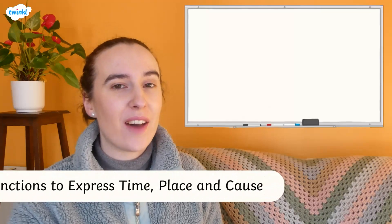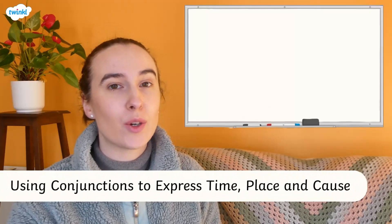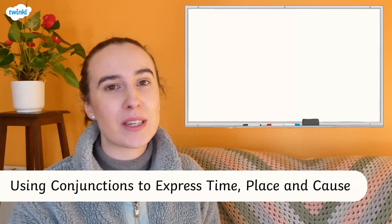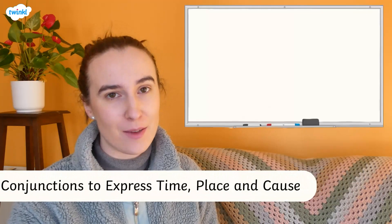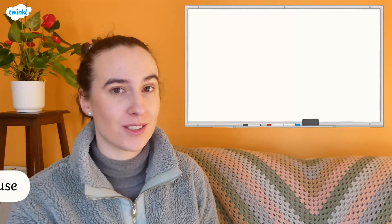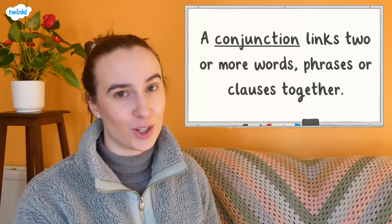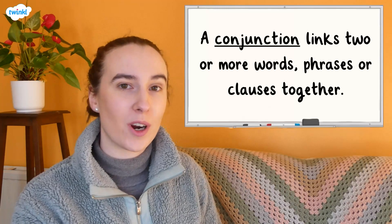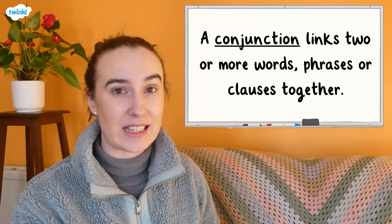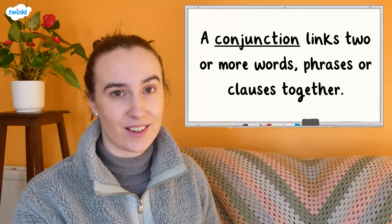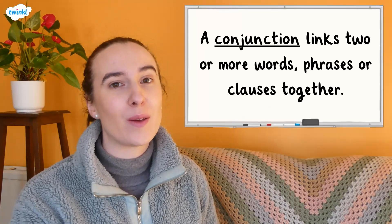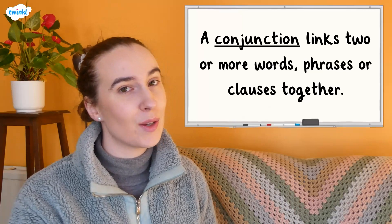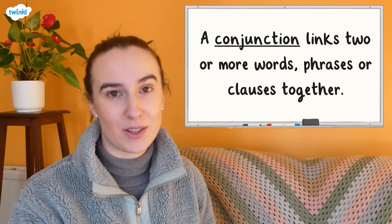In this video we will be having a look at how conjunctions can be used to express time, place or cause. A conjunction links two or more words, phrases or clauses together. They can be found at the beginning of a sentence or in the middle of it.